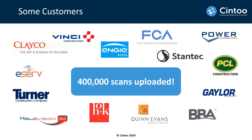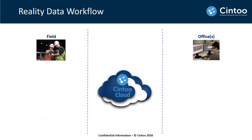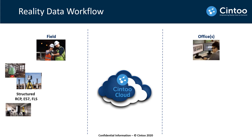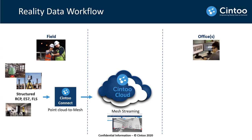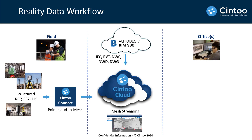We've been in business for more than a year now and have more than 100 companies using Cintu Cloud worldwide in AEC, manufacturing, and oil and gas. They have uploaded more than 400,000 scans to the platform so far. The workflow for using Cintu Cloud is: we take your laser scan data after registration using RCP, E57, or FLS file formats, and run locally the Cintu Connect Windows app, which performs the point cloud-to-mesh transformation. Everything uploaded to the cloud is mesh-based for streaming. We can also connect Cintu Cloud to BIM 360 to pull 3D data — BIM models like IFC, RVT, Navisworks models, 3D DWG, and now 2D DWG — and overlay this BIM information over the scan data in our viewer.